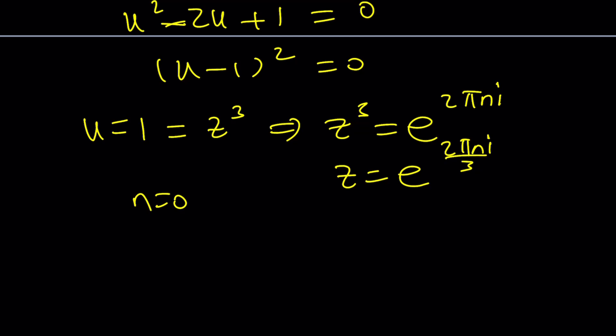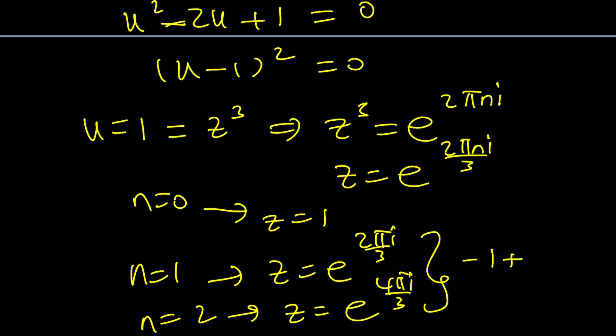If n is equal to 0, then we get z equals 1. If n is equal to 1, we get z equals e to the power 2 pi i over 3. If n is equal to 2, we get z equals e to the power 4 pi i over 3. And guess what? Those will give you the exact same solutions. Negative 1 plus minus the square root of 3i all over 2. And 1 is just 1.